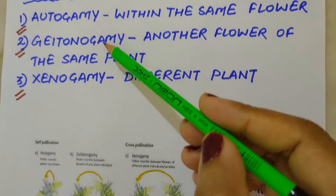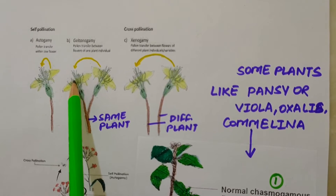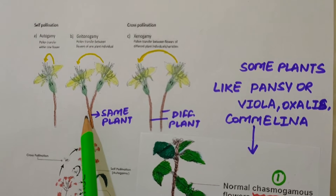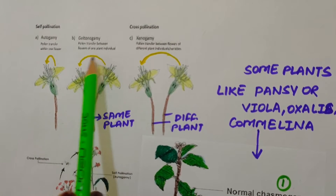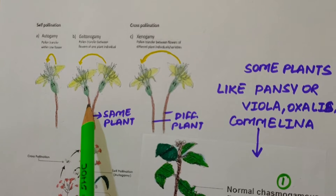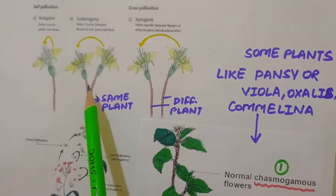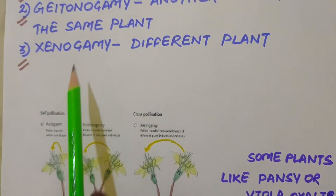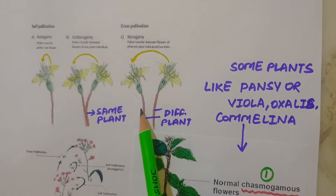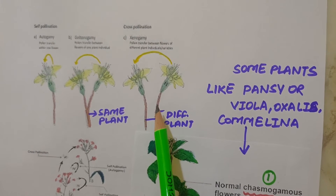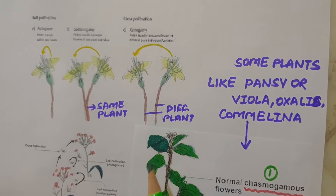The second type is geitonogamy. Transfer of pollen from the anther to the stigma of another flower of the same plant is called geitonogamy. Although geitonogamy is functionally cross-pollination involving a pollinating agent, genetically it is self-pollination since the pollen comes from the same plant. The third type is xenogamy — transfer of pollen grain from the anther to the stigma of a different plant. This is the only type of pollination which brings genetically different types of pollen grain to the stigma.